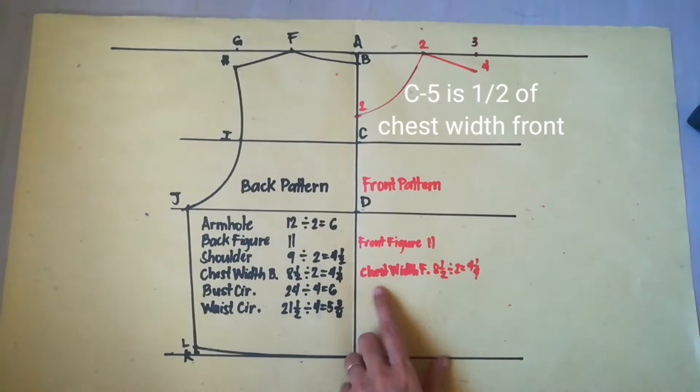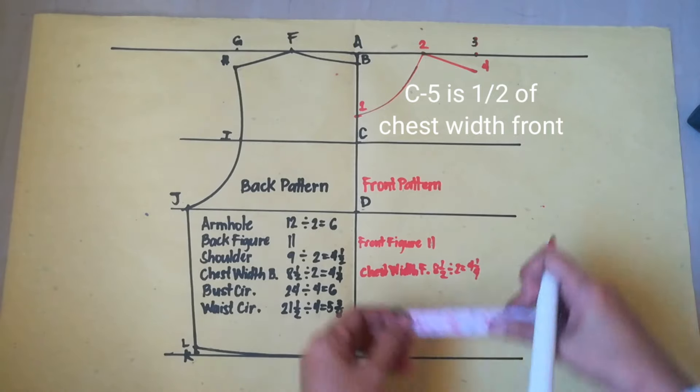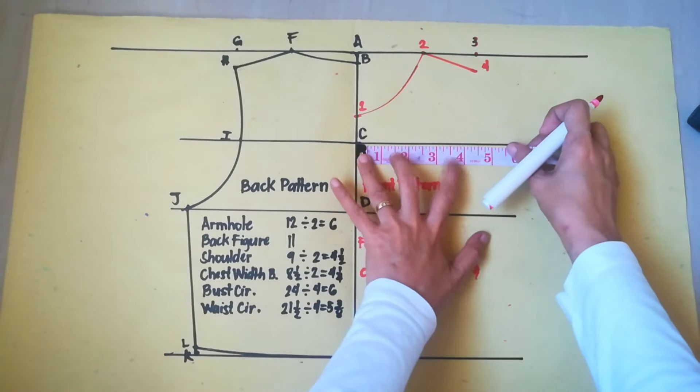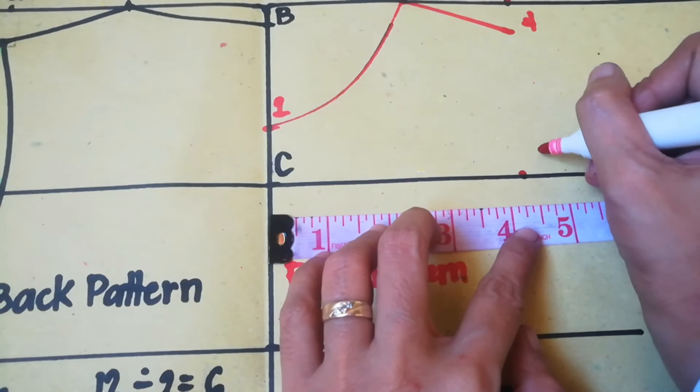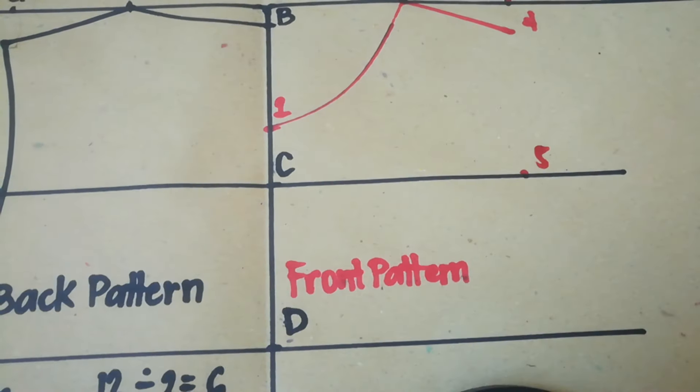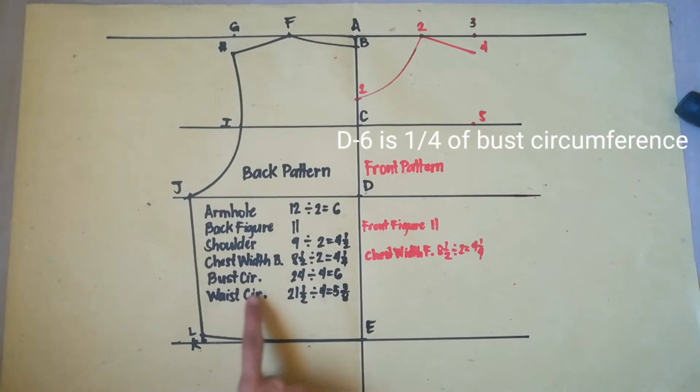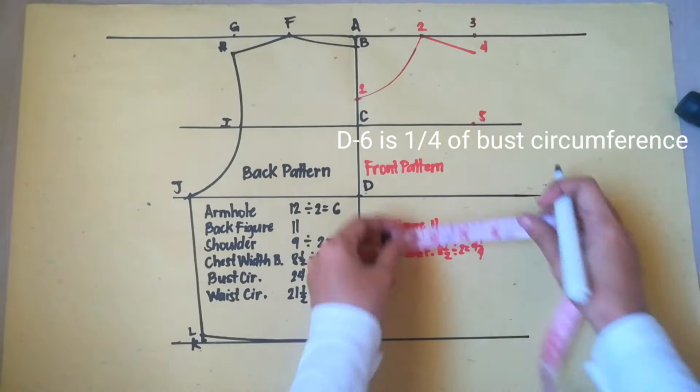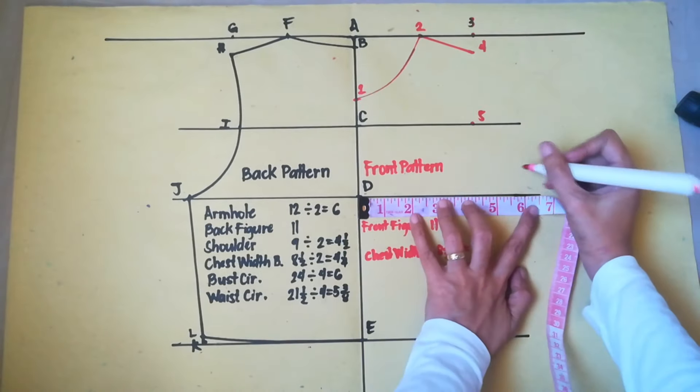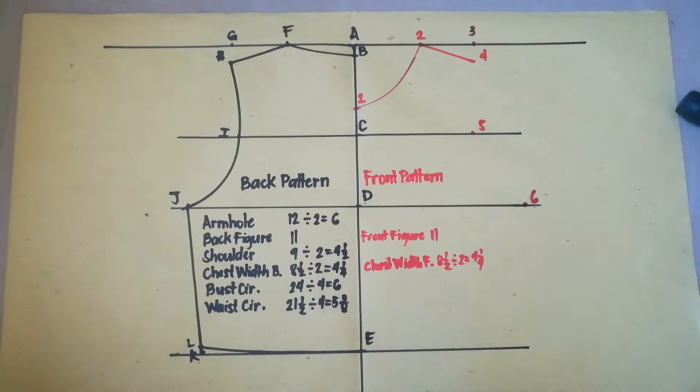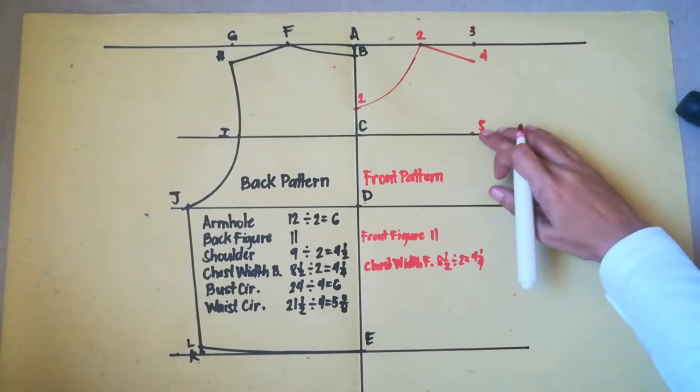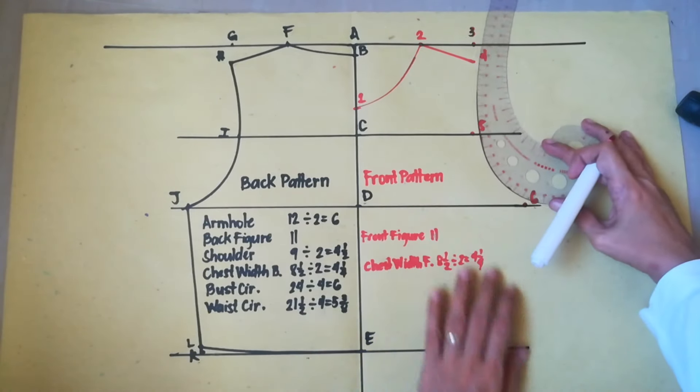C to 5 is 1 half of chest width front. So, it is 4 and 1 fourth. Now, D to 6 is 1 half of bass circumference. So, it is 6 inches. Now, connect points 4, 5, and 6 with the use of French curve.